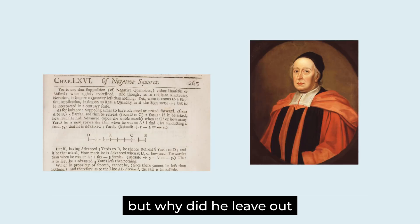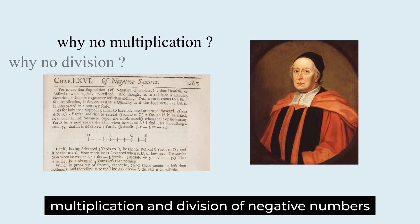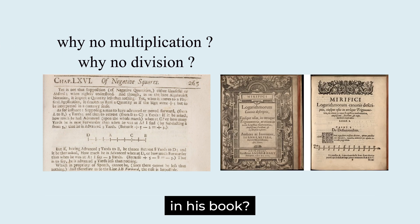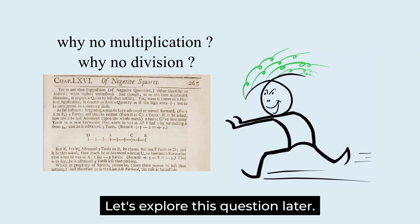But why did he leave out multiplication and division of negative numbers in his book? Let's explore this question later. Thank you.